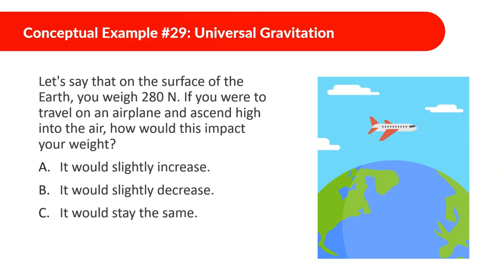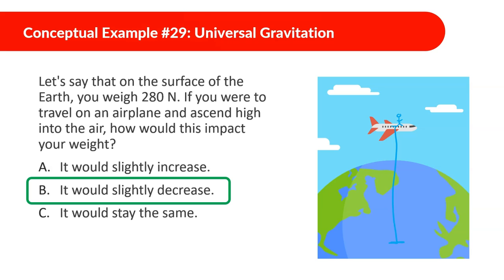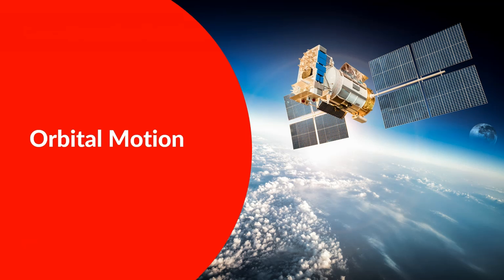Example 29: if you weigh 280 newtons on the surface of the Earth and you travel on an airplane high into the air, how does this impact your weight? Since you're further from the center of the Earth, the force of attraction between you and the Earth is less, meaning your weight slightly decreases. It's almost insignificant in practice, but it is slightly less.